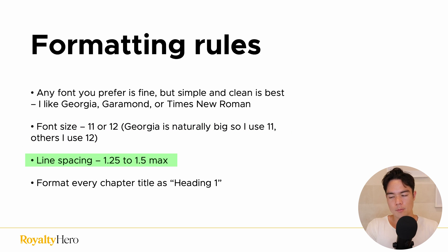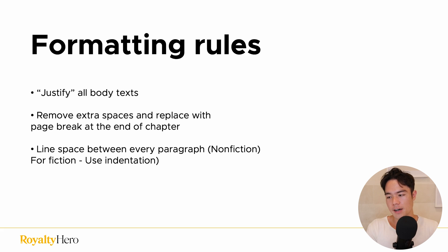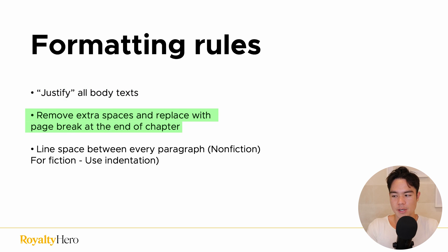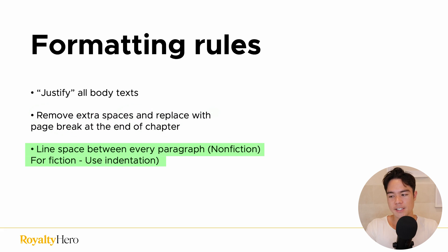For line spacing, stick to 1.25 to 1.5 max, and format every single chapter title as Heading 1. You also want to justify all body text, remove extra spaces and replace them with a page break at the end of each chapter. For a nonfiction book, add line space between every paragraph; for fiction, use indentation. This video might be more detailed than others on YouTube, but I wanted to make sure you can format a beautiful book yourself with Microsoft Word.